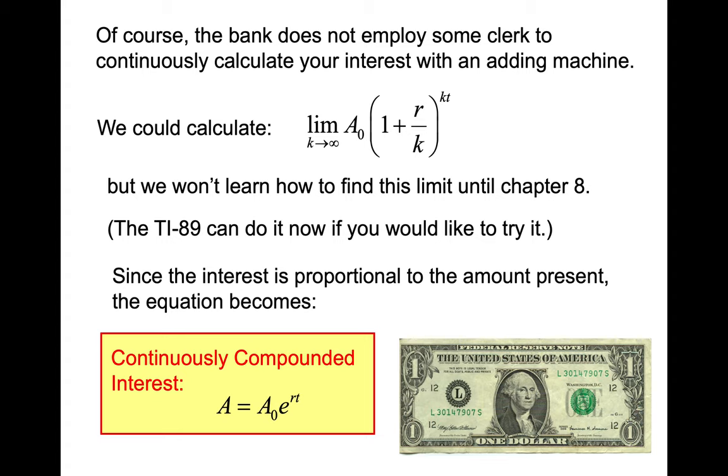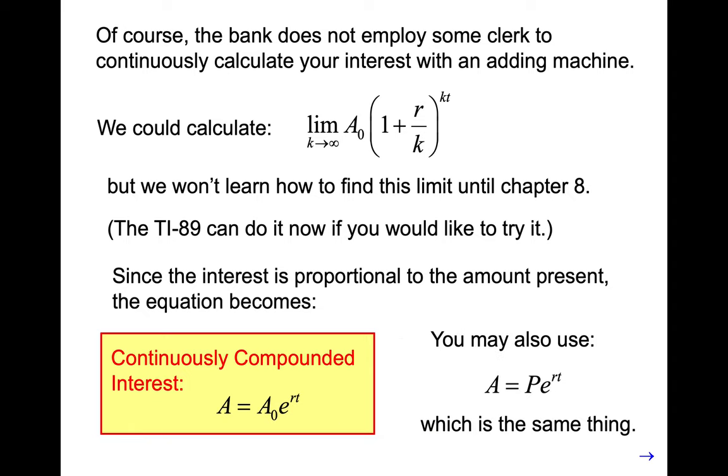So you end up with this. So continuously compounded interest, the amount that you have in your account is your initial amount times e to the rt, where r is the interest rate expressed as a decimal, and t is the time in years. And that's the formula. And notice it looks a lot like y equals y-naught e to the kt. It's the same formula. Sometimes we use it this way where p represents the principle that you are investing. Same thing.